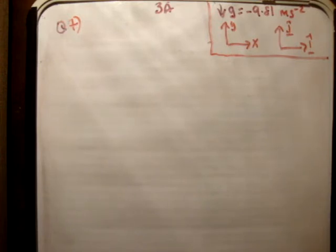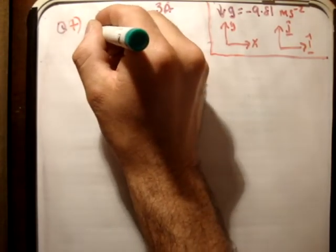So we notice first, of course, the gravity, the xy-plane, and the unit vectors as normal. Next, we sketch the motion.